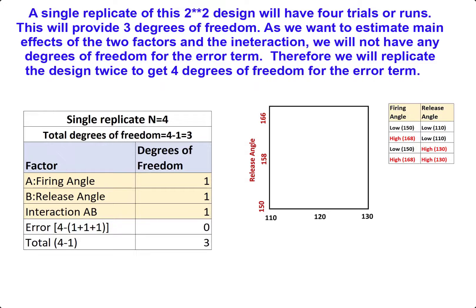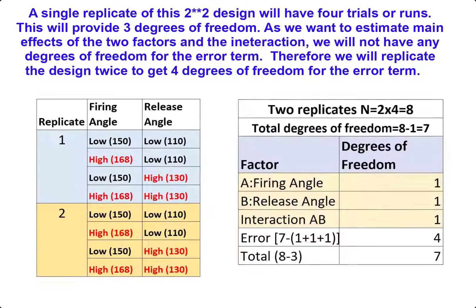This will provide three degrees of freedom. As we want to estimate main effects of the two factors which will require one degree of freedom each and also the interaction which will also require one degree of freedom. We will not have any degrees of freedom for the error term. Therefore, we will replicate the design twice to get four degrees of freedom for the error term.